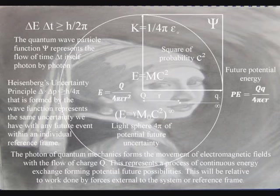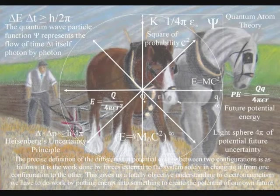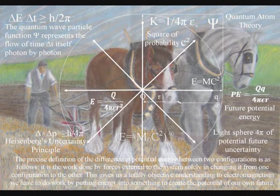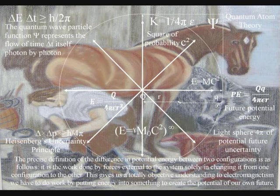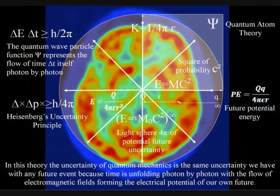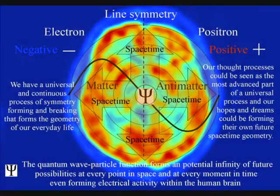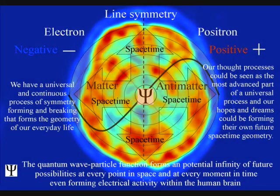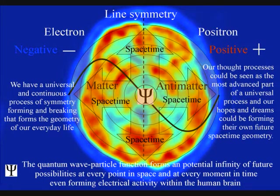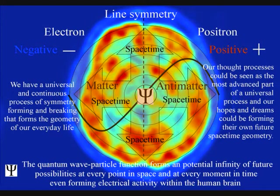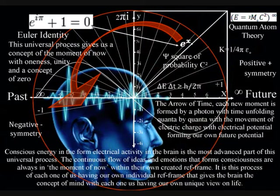The voltage is the work done to bring a test charge little q from infinity all the way in to a point that is a distance R away from the main charge Q. This gives us a totally objective understanding of electromagnetism — we have to do work by putting energy into something to create the potential of our own future. Because this is a universal process, it must be the same for all electrical activity; therefore, electrical activity in the brain can be seen as the most advanced part of this universal process. Conscious thought is always in the moment of now, with a continuous stream of thoughts and ideas that can comprehend this process as time — as an interactive process of continuous creation with a potential future of infinite possibilities.